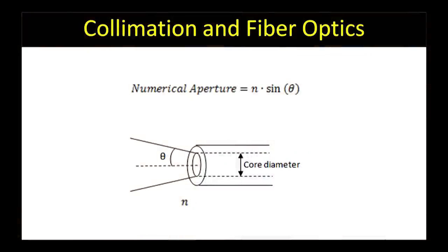In this equation, n is the index of refraction and theta is the maximum half angle of the light accepted by the component. Typically, this system is in air, so n equals 1.